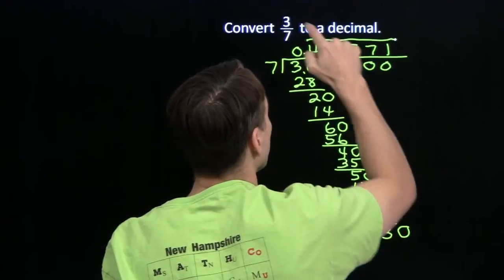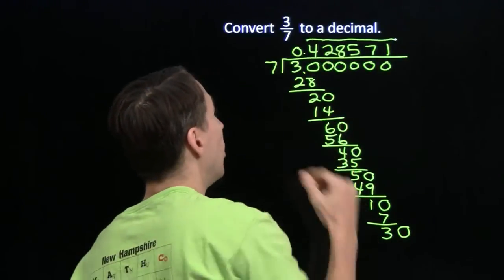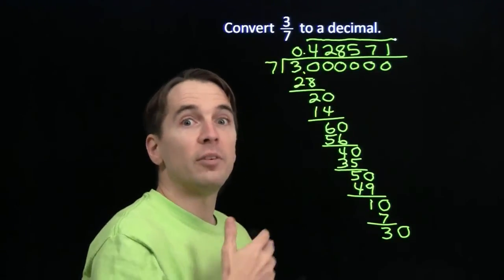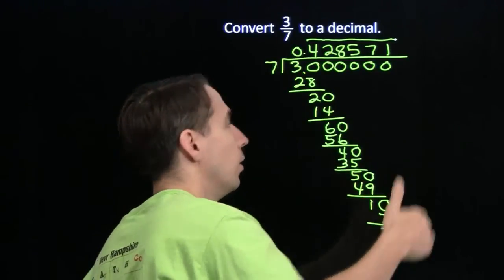So we've turned this fraction into the repeating decimal, 0.428571, and we'll just repeat those 6 digits over and over: 428571, 428571, 428571, on and on.